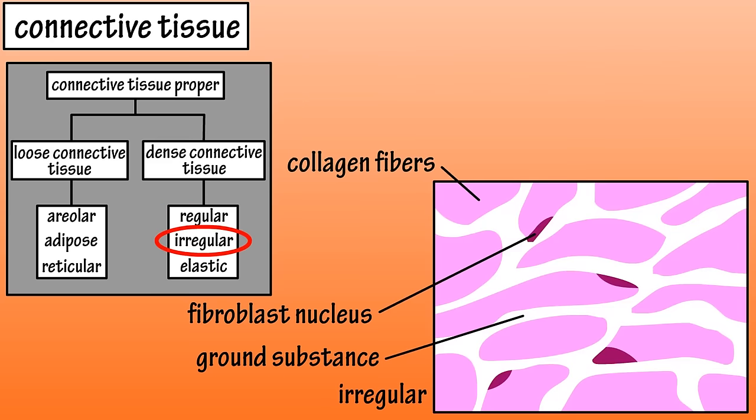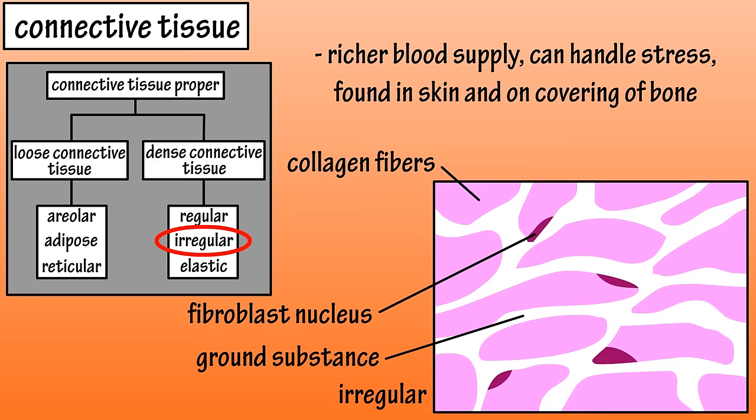Dense irregular connective tissue consists of collagen fibers that are clumped together, forming an irregular pattern. It also contains fibroblast cells and has more ground substance and a much richer blood supply than dense regular connective tissue. This tissue can handle stress in multiple directions and is found in the dermis of the skin and in the periosteum, which covers bone.